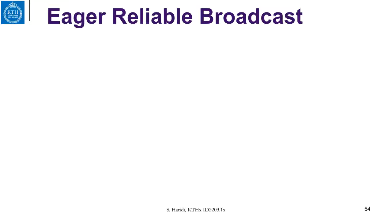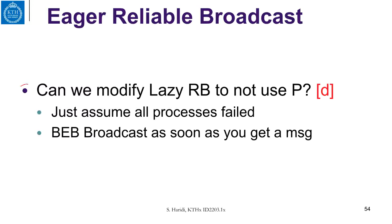So now let us ask ourselves another question: can we modify the Lazy Reliable Broadcast and not use P, and for that matter, not use ◇P either? Here is a way to do it — we just assume that all processes have failed. Whenever you get a delivery because somebody did a rebroadcast to you, you just rebroadcast as soon as you get the message. So it always takes two communication steps. Each process first gets a delivery, then does a rebroadcast. Notice in this algorithm we don't use failure detectors, so we are in the fail-silence model.